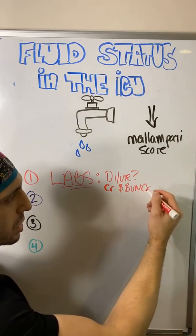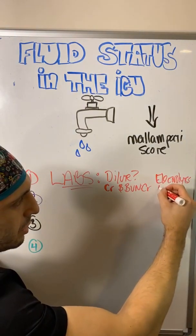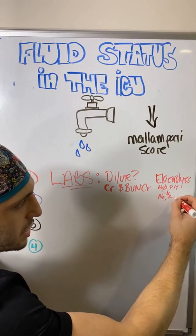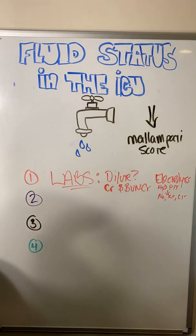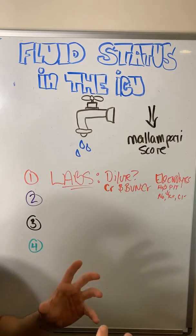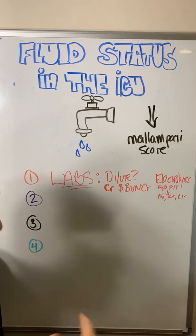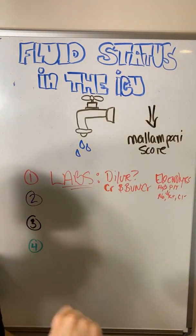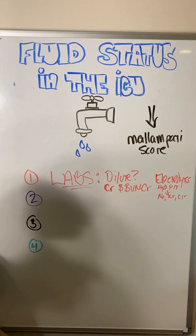We also look at electrolytes — sodium, potassium, chloride — the same idea as hemoglobin and platelets. If everything looks like it's jumping up and creatinine is rising, that might be a hint from our labs that the patient is intravascularly dry. Remember, volume status usually refers to intravascular volume, not total volume, which could be in their gut, lungs, abdomen, or everywhere.